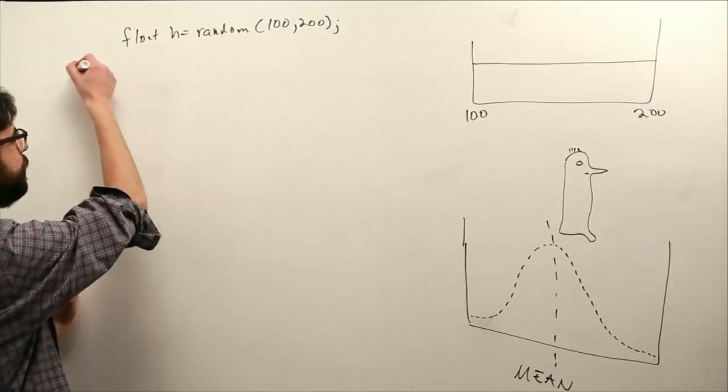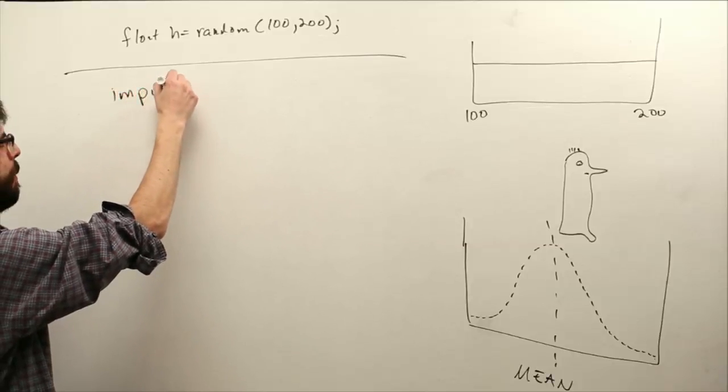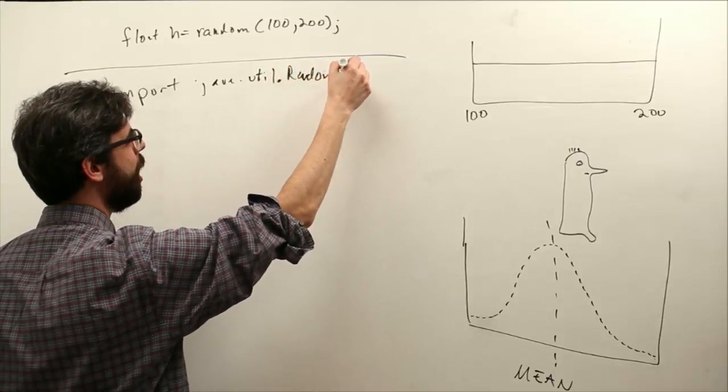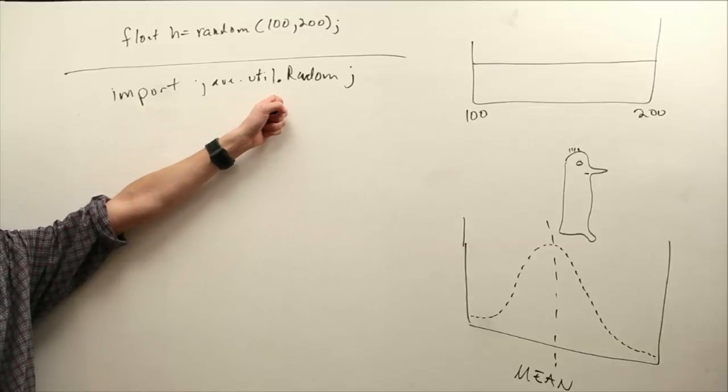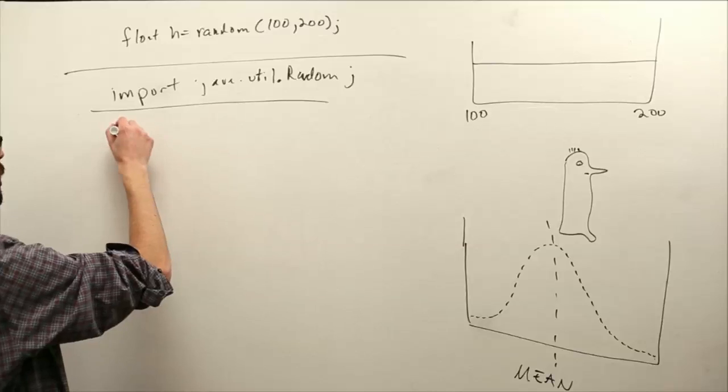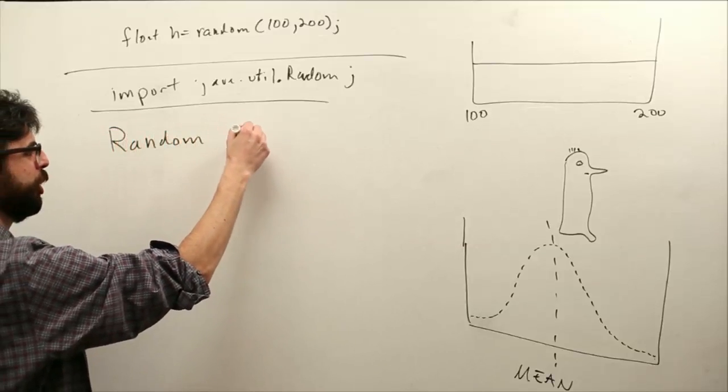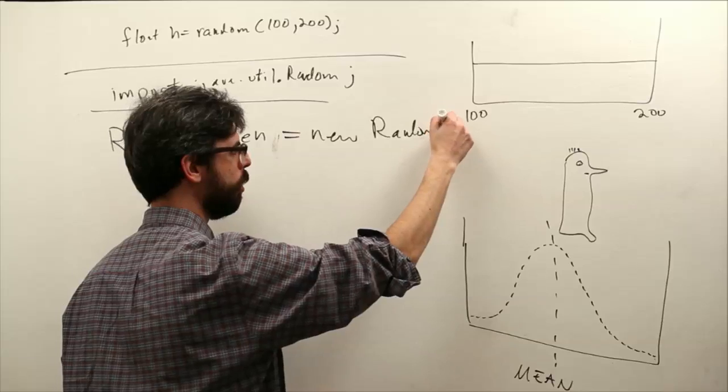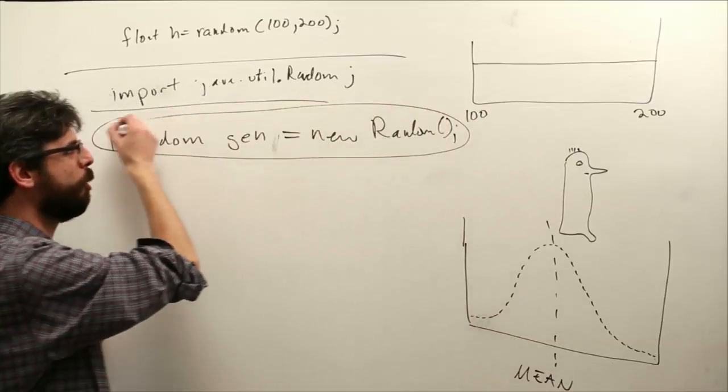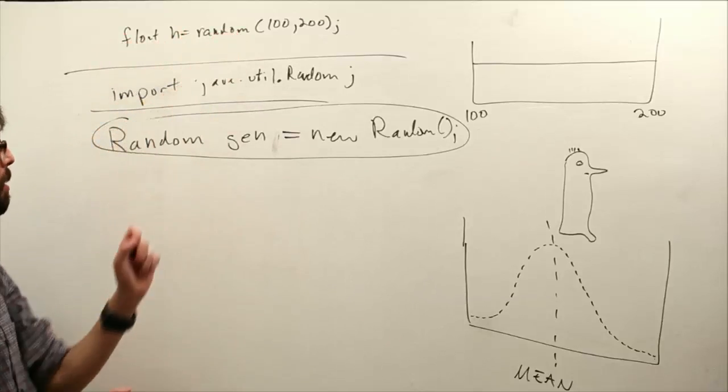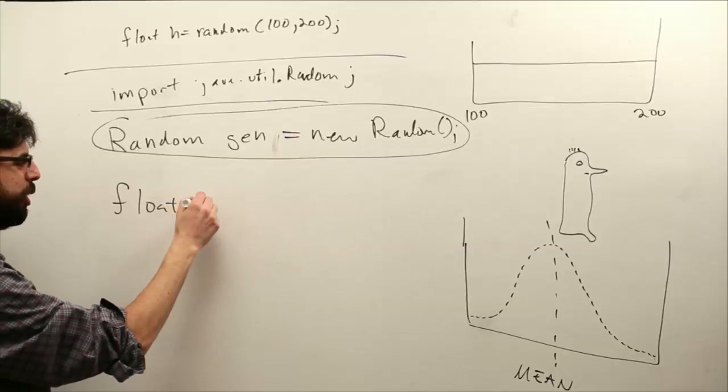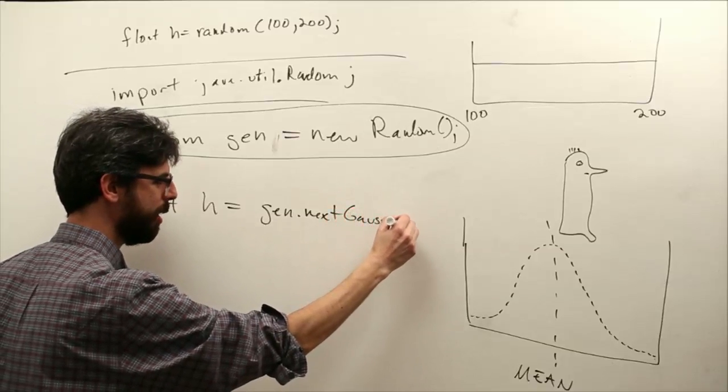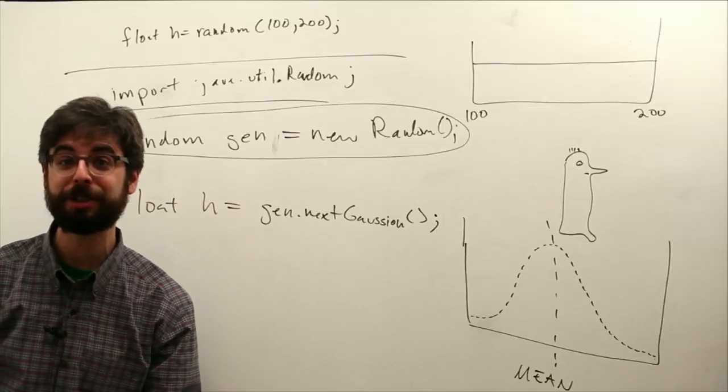So how do we rewrite this code? One thing we have to do is, at the top of our code, import a class. And actually, we might add Gaussian random numbers into Processing, which I think would make sense. But for right now, you have to import this random class. It comes from Java. Once you import that class, you can declare a random object. I'm going to call it a generator, gen for short, a random number generator. And as with any object, we've got to initialize it as a new random, a new object. This generator is now responsible for our random numbers. So instead of saying float h give us a random number, we can say float h equals gen.nextGaussian.